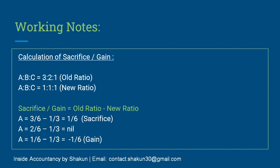Before passing entries we need to find the amount of sacrifice or gain. Calculation: sacrifice or gain equals old ratio minus new ratio (a positive result means sacrifice; negative means gain). For A: 3/6 minus 1/3 equals 1/6 — sacrifice. For B: 2/6 minus 1/3 equals nil — no sacrifice or gain. For C: old minus new gives minus 1/6 — that is a gain. Note: there is a small labelling error in the working; it is A, B, C. So A is sacrificing and C is gaining.